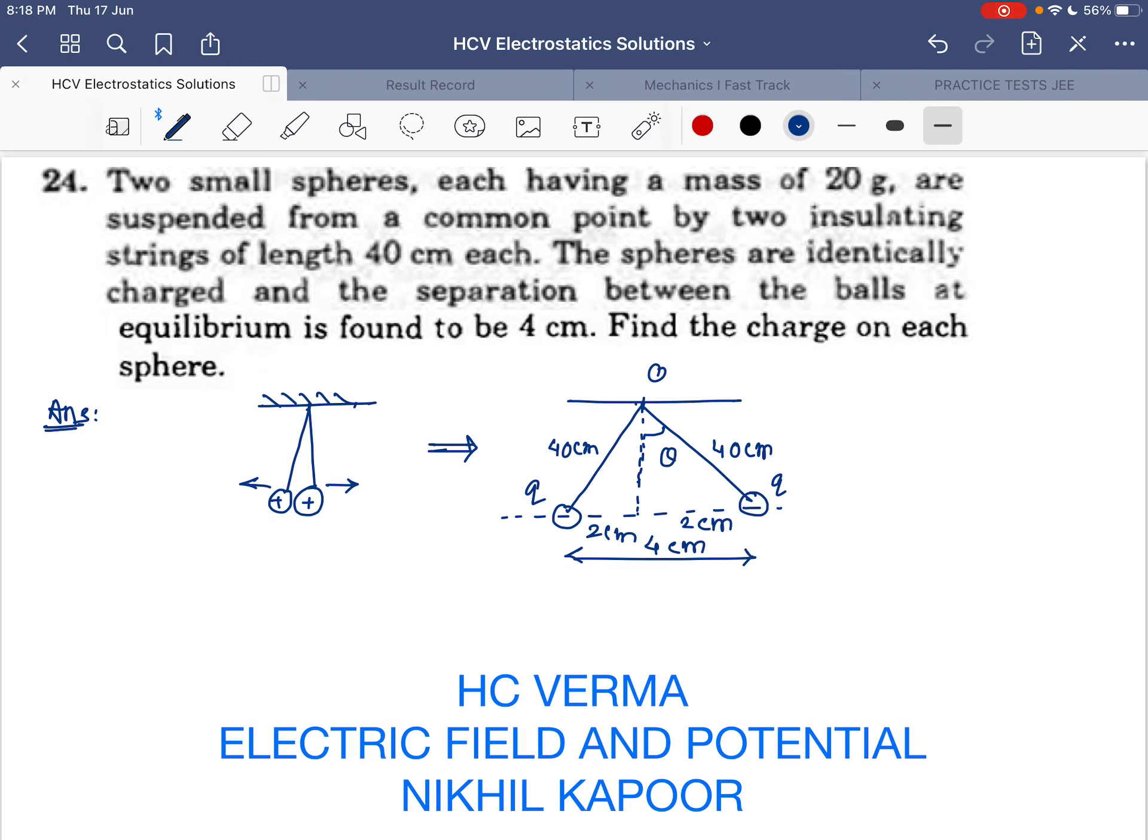Now consider the equilibrium of any one of the charges. Let's take the equilibrium of the rightward charge. Its weight is acting in the downward direction, the tension in the string is acting along the string in the upward direction, while the repulsive electrostatic force is acting in this direction.